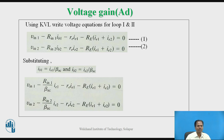Since the collector current is approximately equal to the emitter current, IB1 = I1/βdc and IB2 = I2/βdc. We can replace IB by I/βdc. Substituting into the equations: VIN1 − (RIN1/βdc)·I1 − RE·I1 − RE·(I1 + I2) = 0. Similarly, VIN2 − (RIN2/βdc)·I2 − RE·I2 − RE·(I1 + I2) = 0.